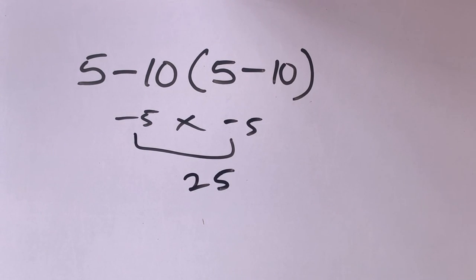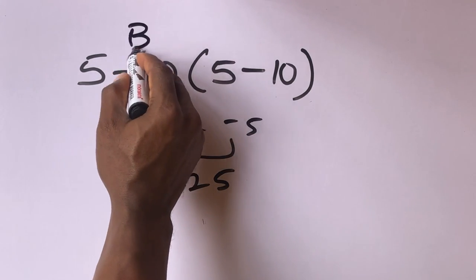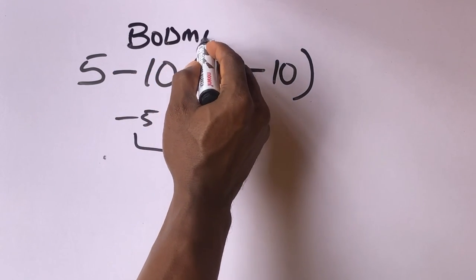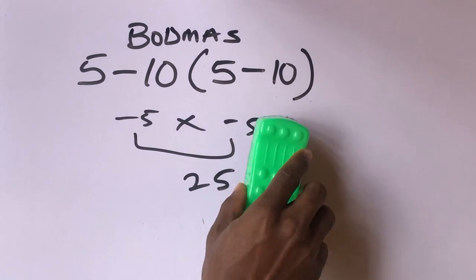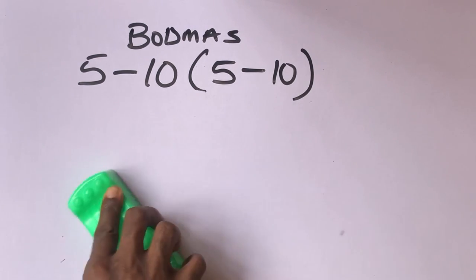But this answer is not correct. According to order of operations, we have to first of all solve what is inside the bracket, then we solve division, multiplication, addition, and then subtraction. So let's solve it correctly and see the correct answer.